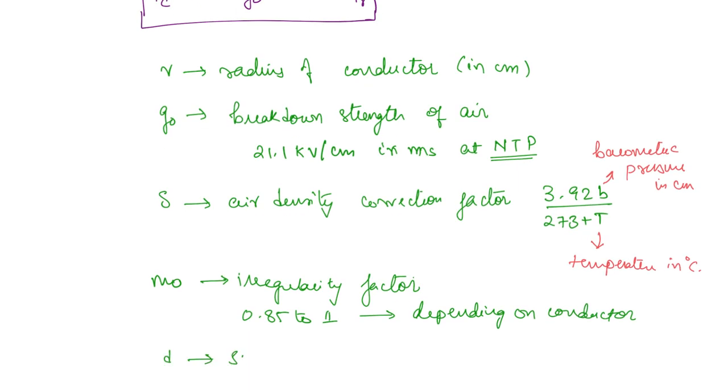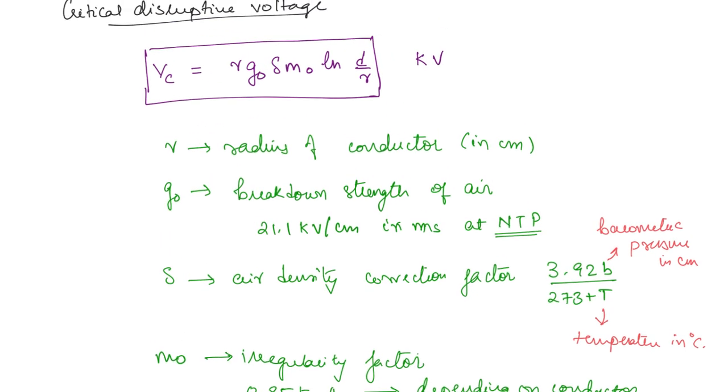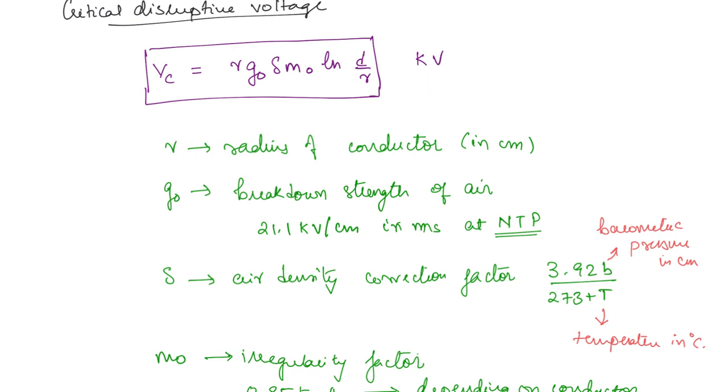And finally, D is the space between conductors and this also is going to be in centimeters. Remember only when you use all of these parameters in the units that are mentioned here, only then this voltage is going to come as kilovolt.